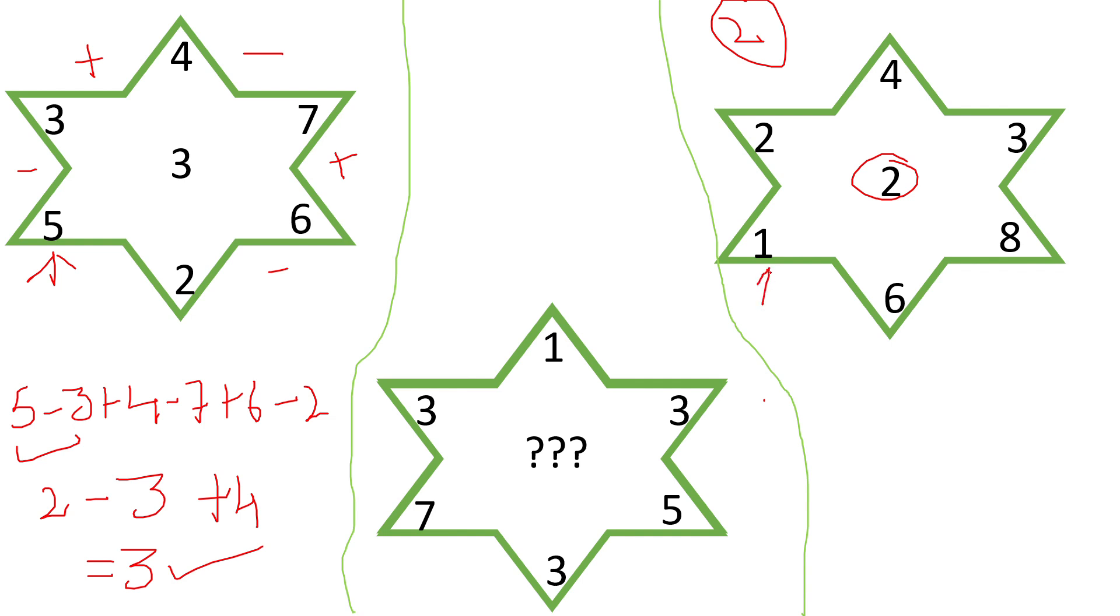I'll start off with this number. So let's write 1 minus 2 plus 4 minus 3 plus 8 minus 6. Again I'll solve two numbers at a time, so these two will be minus 1, these two will be plus 1, and these two will be plus 2. So the final answer will be 2.